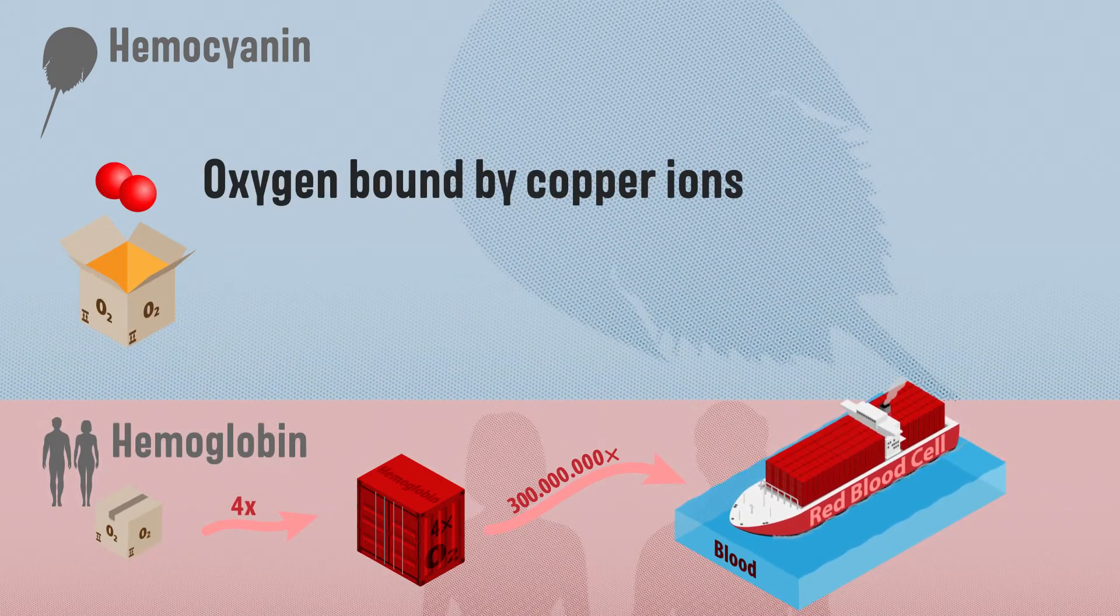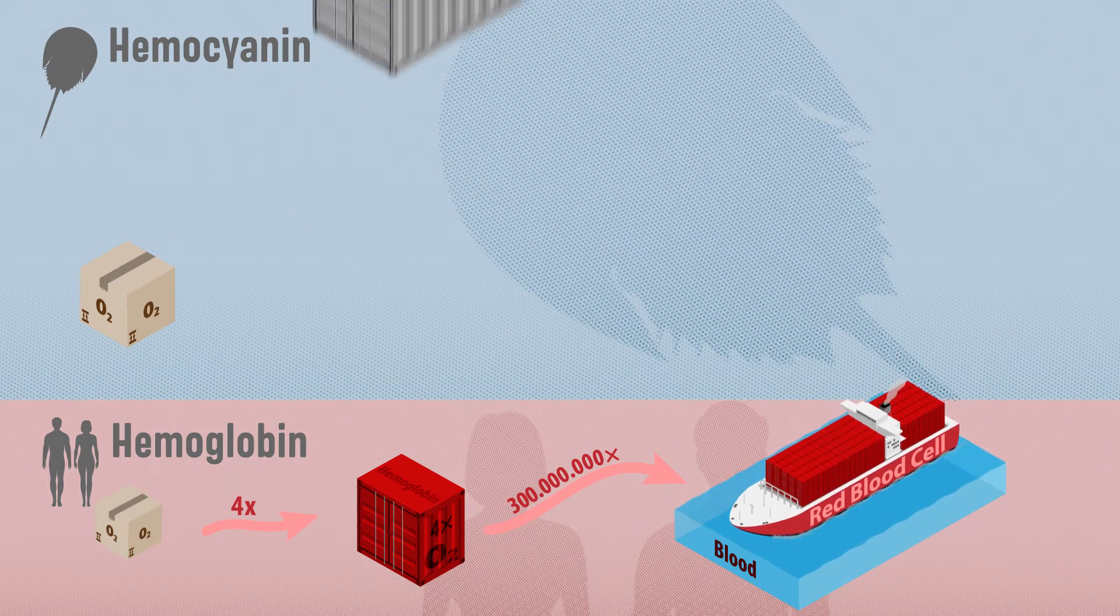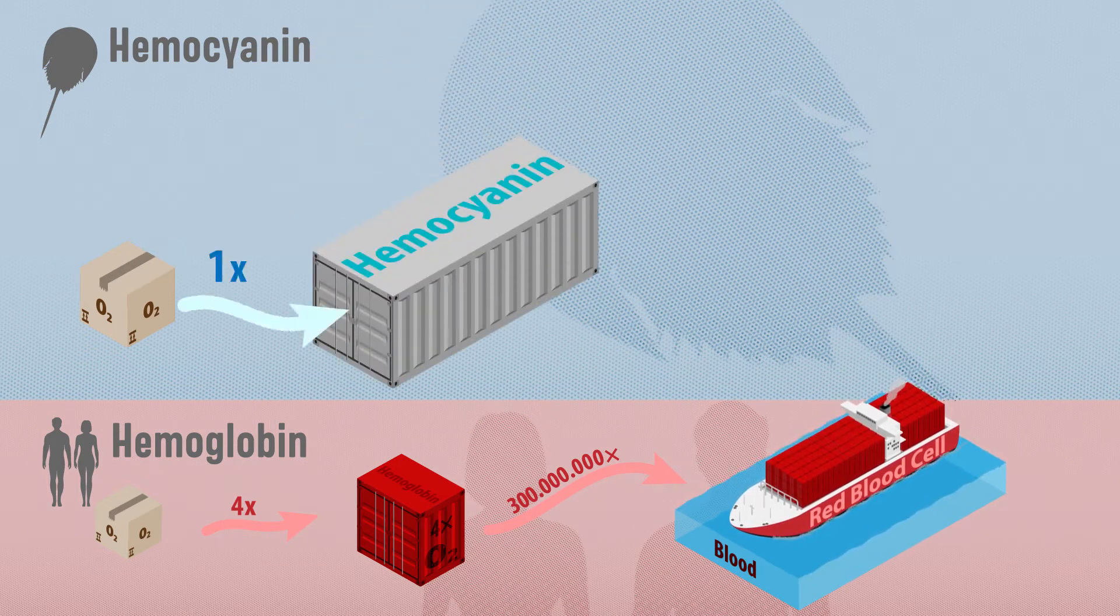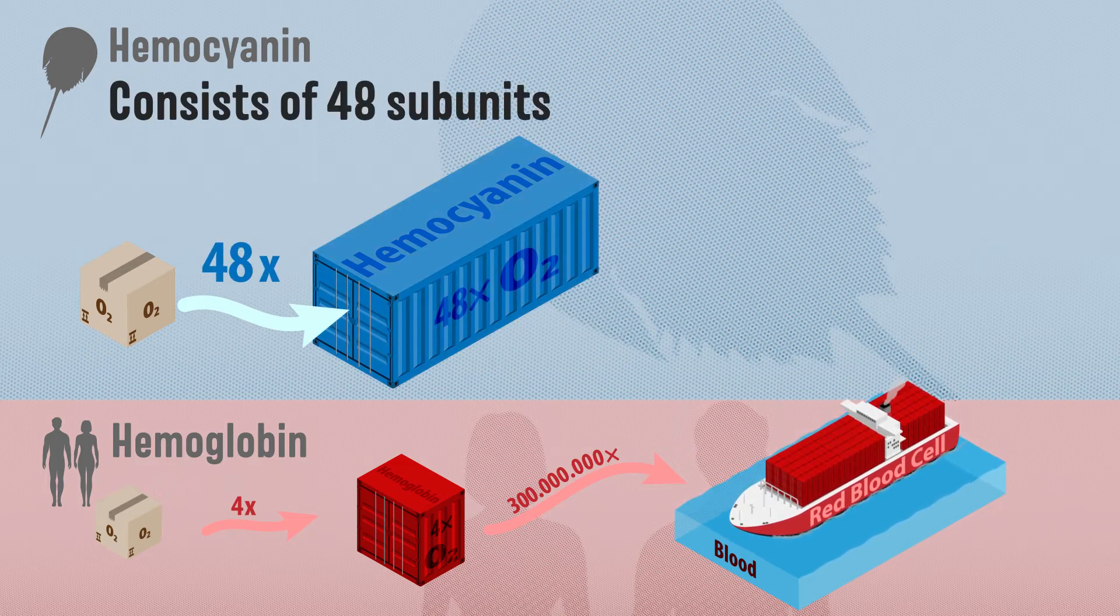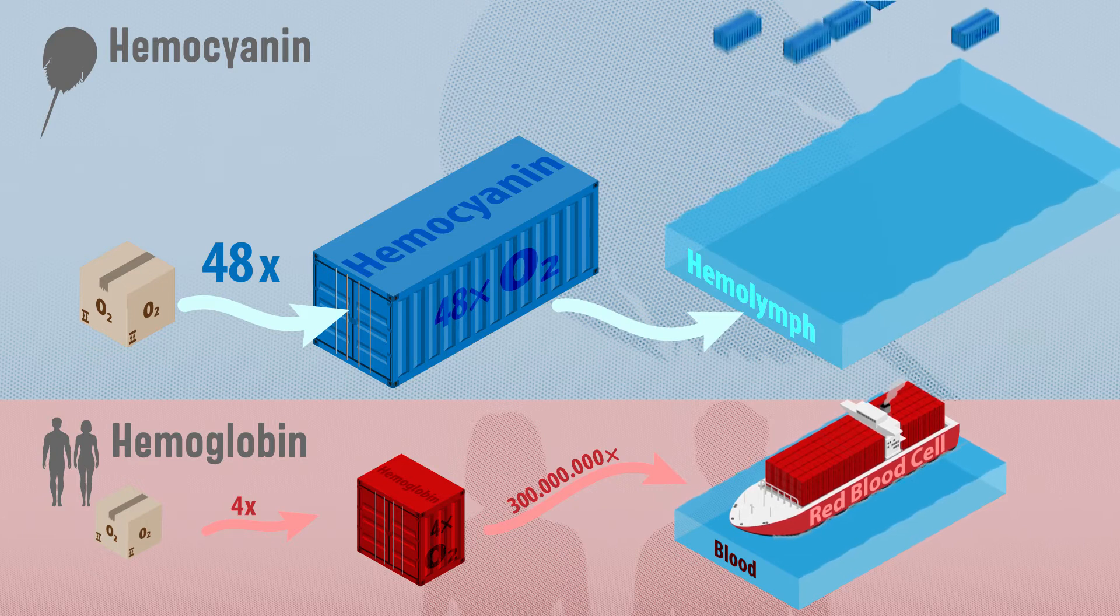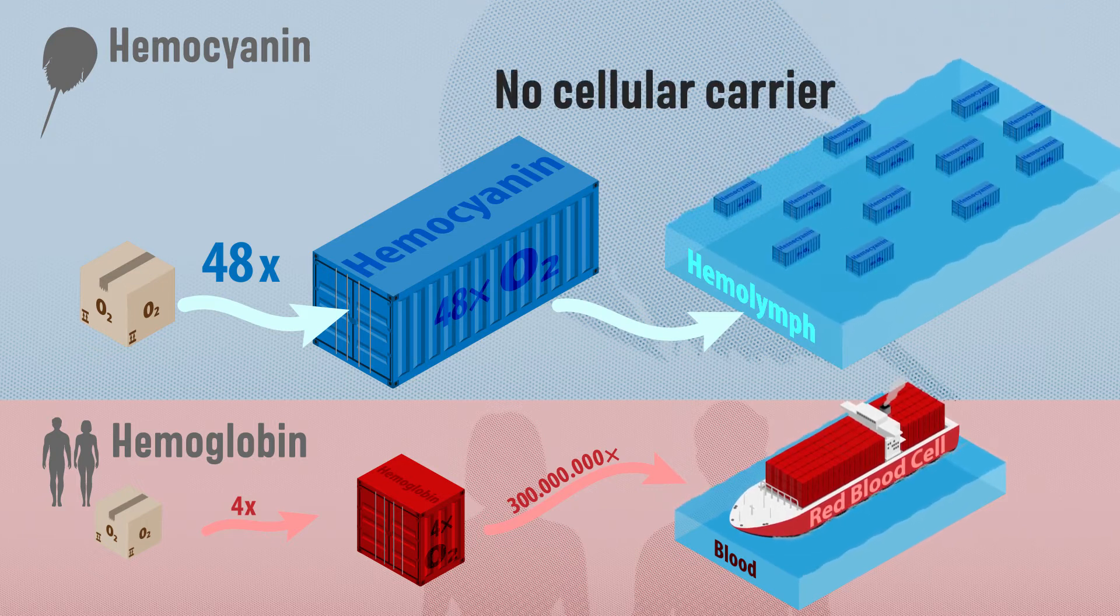Haemocyanin, however, uses copper ions to reversibly bind oxygen. In horseshoe crabs, it consists of 48 subunits and changes from translucent to blue upon oxygenation. Unlike haemoglobin, there is no cellular carrier.